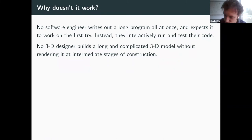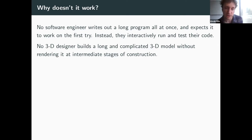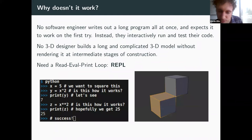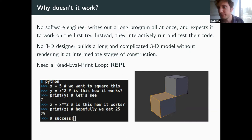Intuitively, we're asking the neural net to do something humans never have to do. Humans don't write out all their code at once and hope it works — and the same is true for graphic designers making 3D models. What we need is a kind of read-eval-print loop: an interactive coding environment where we can build 3D models, write new code, run it, and see what it does. This feedback helps steer the search toward the correct solution.